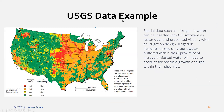A good example of useful data you can pull is nitrogen data. Nitrogen is harmful to irrigation systems. Spatial data such as nitrogen water content can be inserted into GIS software as raster data and presented visually alongside your irrigation design. If your irrigation design relies on groundwater and your groundwater source is in close proximity to high nitrogen output, you'll have to account for that in your irrigation design and make the proper steps to mitigate any harm.